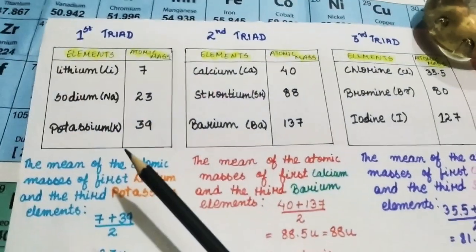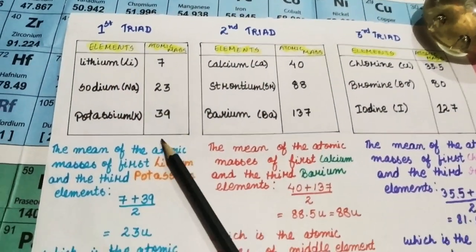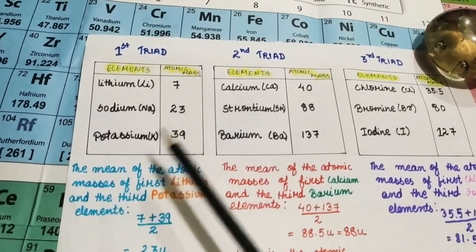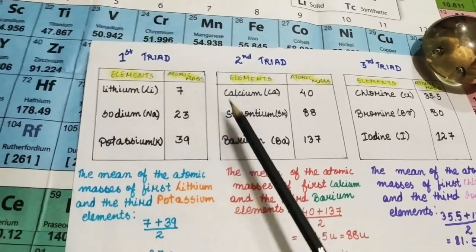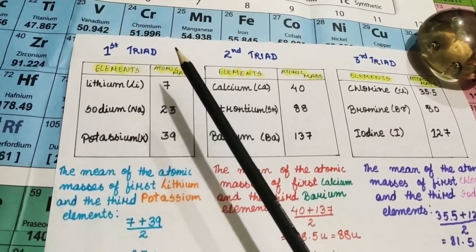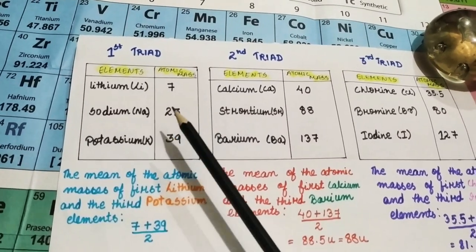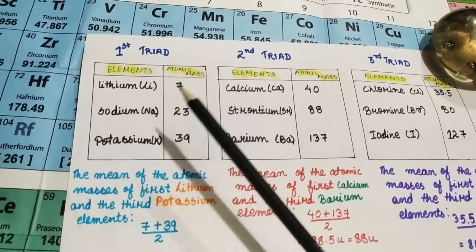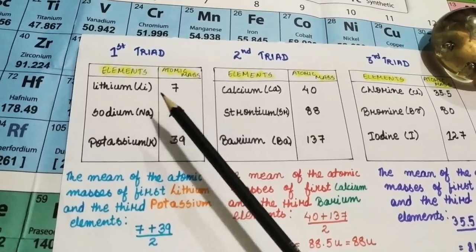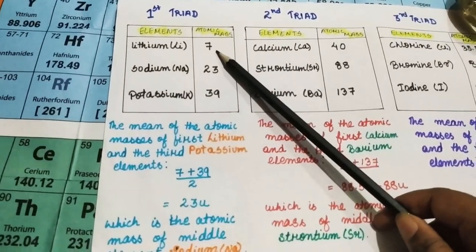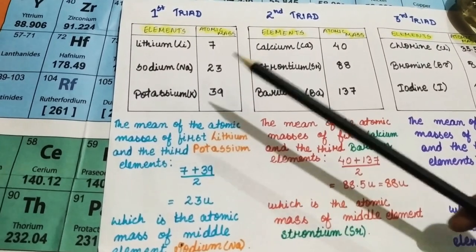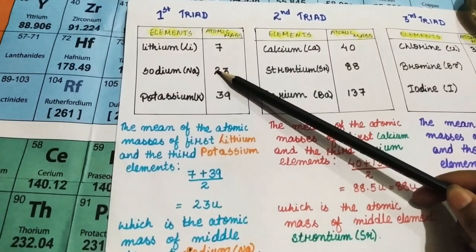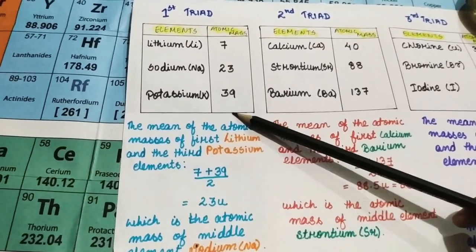Now, let us test his statement with these examples. See, as per his statement, it should be that when the first element and the third element's number is added and divided by 2, that is, when we take the arithmetic mean of the first element and the third element, the result which we get should be the atomic mass of the middle element. Let us check whether his statement is matching with this triad or not. See, here, 7, the atomic mass of lithium, plus 39, atomic mass of potassium, when we divided it by 2, we got 23. And see, 23 is the atomic mass of sodium. So, his statement is valid here.